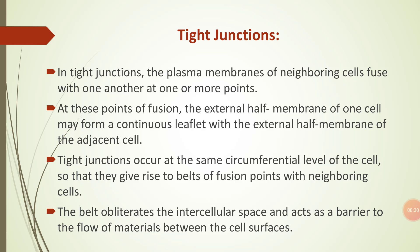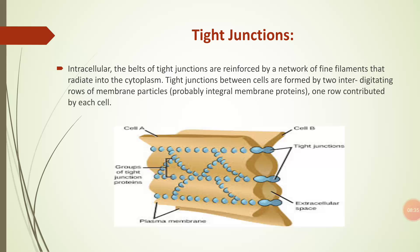This is shown in the diagram of tight junctions. The belt of tight junctions is reinforced by a network of fine filaments that radiate into the cytoplasm. Tight junctions between cells are formed by two interdigitating rows of membrane particles, one row contributed by each cell.